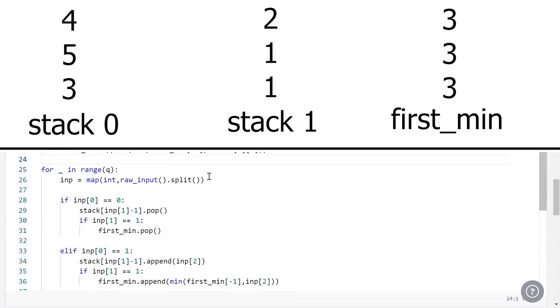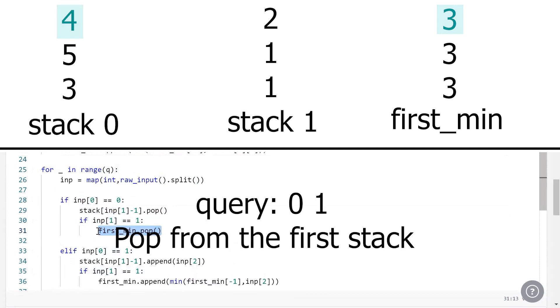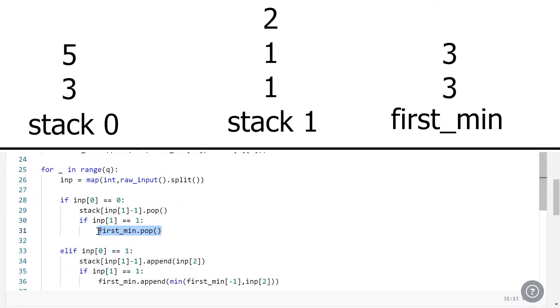Now, as we iterate through our queries, we see that if our input is 0, that means we simply pop an element from our stack, and if it's popped from the first stack, then we've got to pop first min as well. Why are we not maintaining minimum stacks for the rest of the rows? That's because they're in ascending order. We already know the leftmost will be the minimum element, the rightmost will be the greatest element.